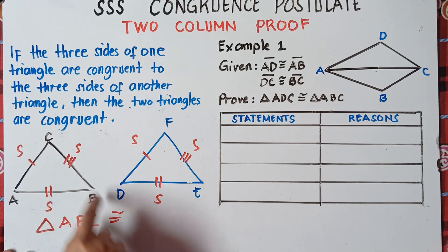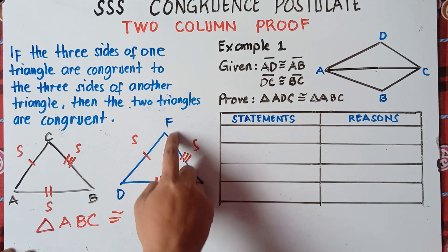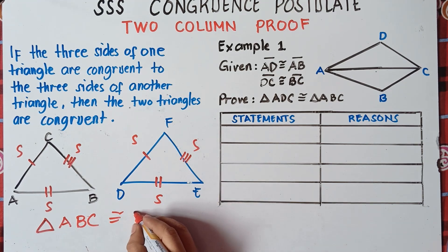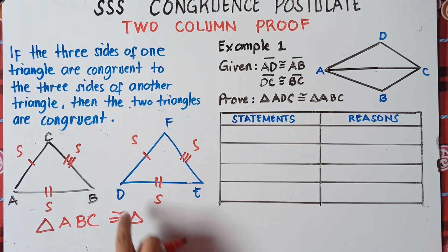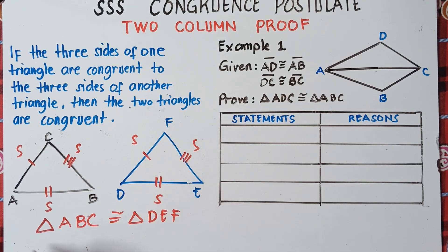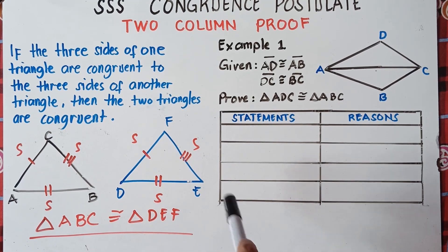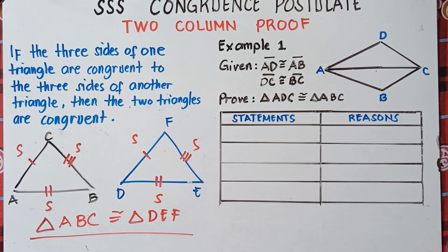If you read it ABC, the other triangle you also read as DEF. It should be symmetrical — ABC, the other one is DEF. According to the side-side-side postulate, the triangles are congruent, so all parts of these triangles are congruent. Triangle ABC is congruent to triangle DEF. Now let's work through an example to really understand this.